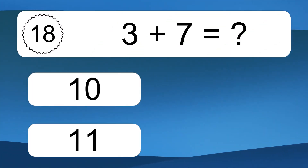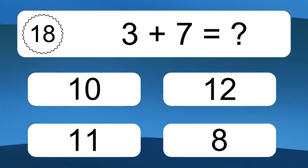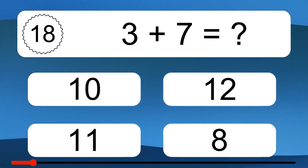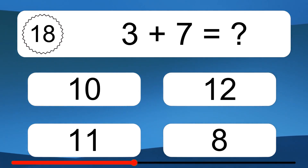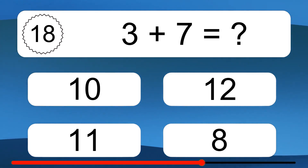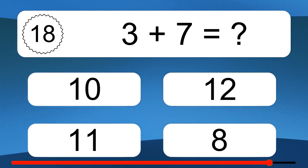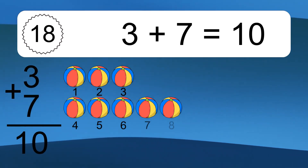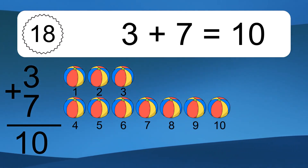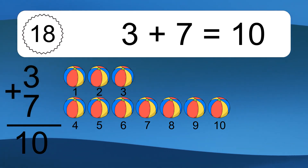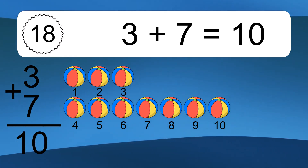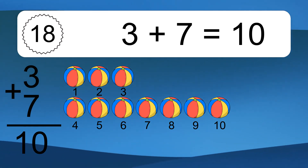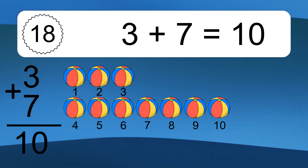3 plus 7 equals what? 3 plus 7 equals 10. Let's count it, 1, 2, 3, 4, 5, 6, 7, 8, 9, 10.